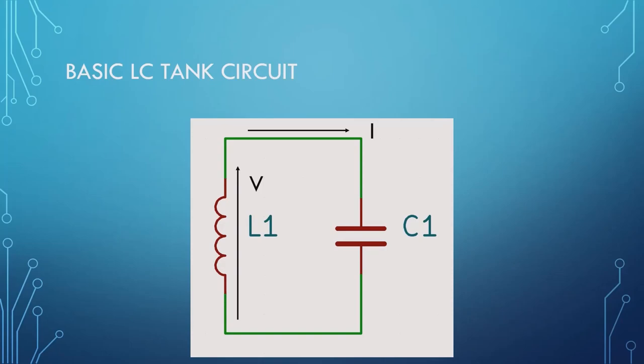What would happen is, as you would apply power to the inductor, it would basically rev up and feed the capacitor. Once the inductor reached its resonance point, it would stop passing current and voltage, and then the capacitor would drain, which would in turn charge the inductor. So you would start to get your sine wave.